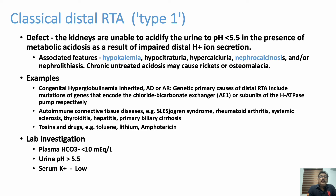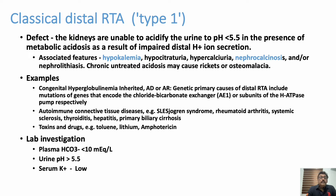Nephrolithiasis is a hallmark. Chronically, if untreated, the patient may develop rickets and osteomalacia due to calcium defects. This disease can be congenital or associated with autoimmune diseases: SLE, Sjögren's syndrome, rheumatoid arthritis, systemic sclerosis, thyroiditis, hepatitis, and primary biliary cirrhosis. In all these conditions, some patients develop acidosis — a normal anion gap acidosis — mainly due to a renal disorder leading to RTA secondary to these diseases.